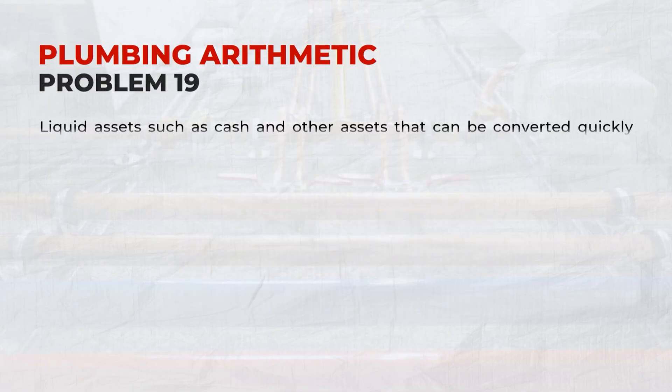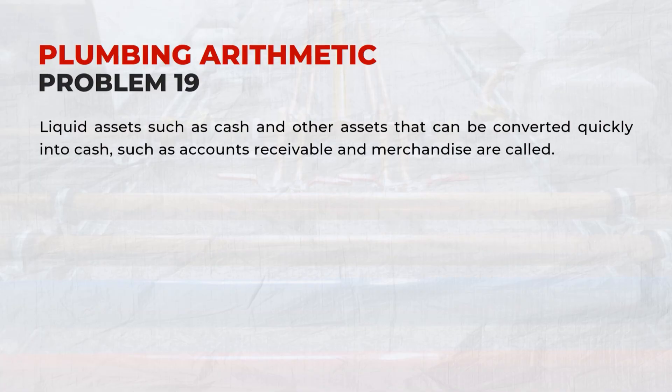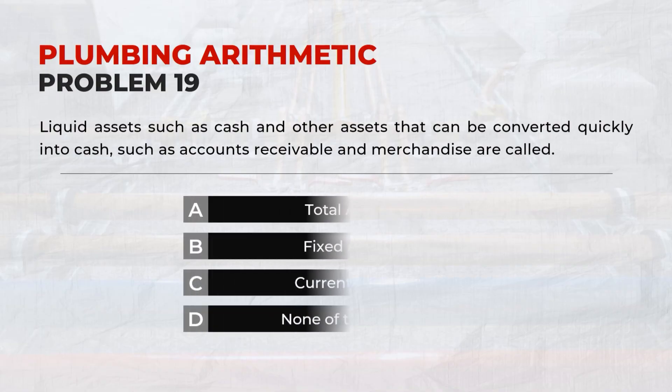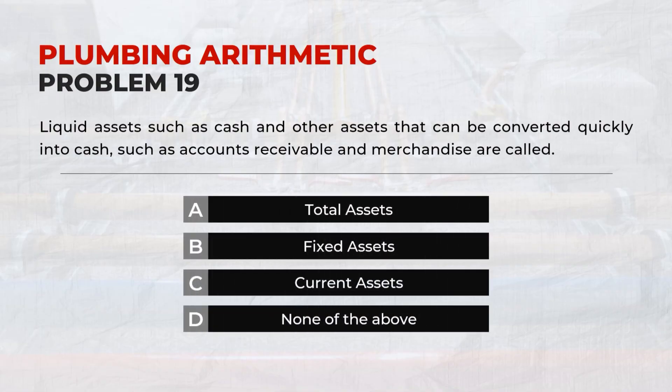Liquid assets such as cash and other assets that can be converted quickly into cash, such as accounts receivable and merchandise, are called: C — Current Assets.